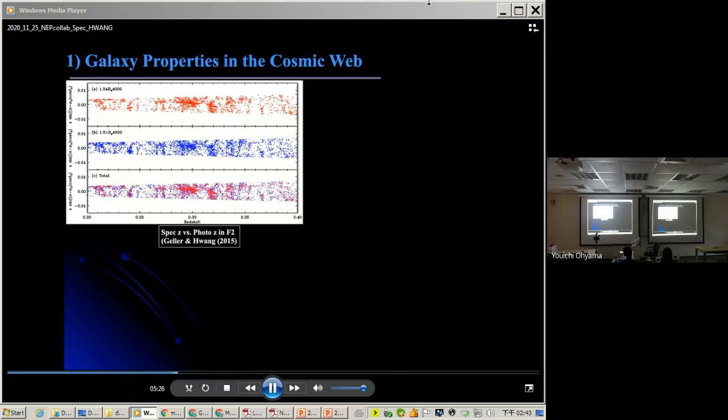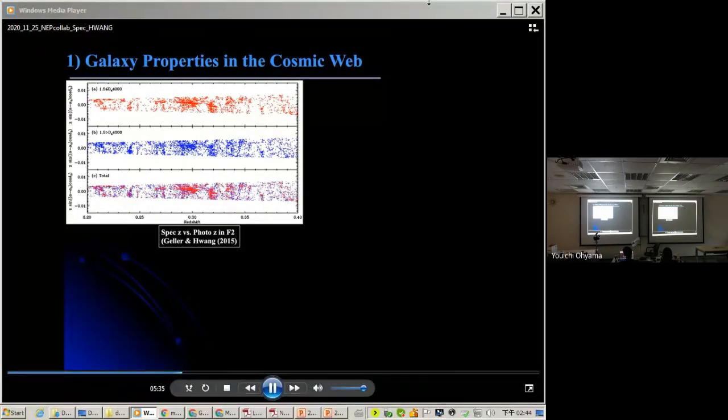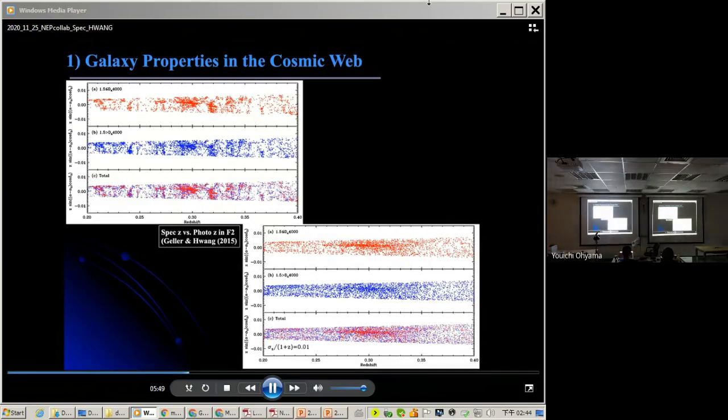The first one is the cosmic web, the galaxy properties in the cosmic web. So here, these coordinates are from a direct survey of NEP2 field. The top panel is for red galaxies, the middle panel is for blue galaxies, the bottom panel is for the combined one. So you can see large-scale structures. Now, we can make the plots but with photometric redshifts. We don't see a sharp structure anymore. Meaning that it's very difficult to study galaxy properties in the cosmic web as a function of filaments, or walls, or clusters.